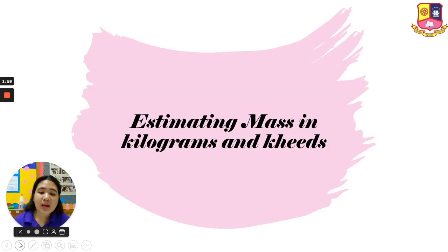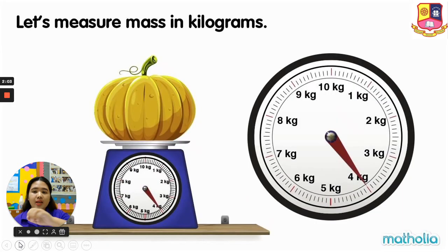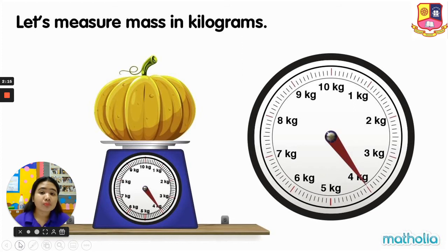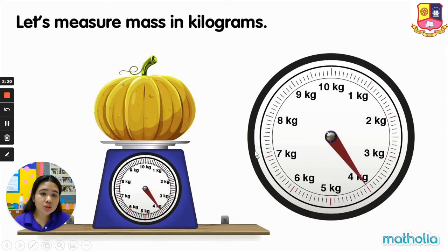Now let's estimate mass in kilograms and kids. Look at the weighing scale — we have 1 kilogram, 2 kilogram, 3 kilogram, 4 kilogram, up to 10 kilogram. Notice on the weighing scale there is a long line and a short line. The long line points at kilogram, and the small lines point to kid.